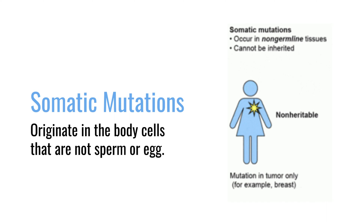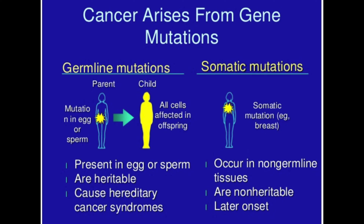A somatic mutation occurs in cells that are not sperm and egg, but maybe muscle tissue or stomach tissue or plasma cells. Those are mutations that may occur in what we refer to as not the germ cells, but all the other cells — the somatic cells — that will stay with you. You won't pass those on. Germline mutations are passed on; somatic mutations are all yours.